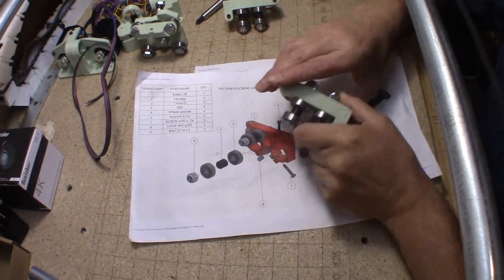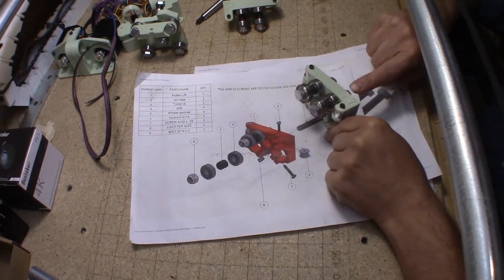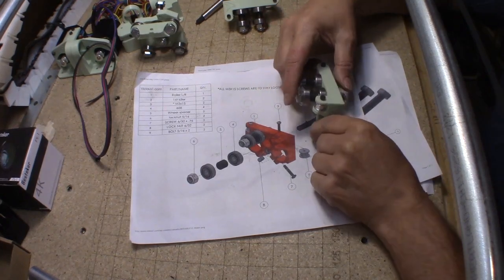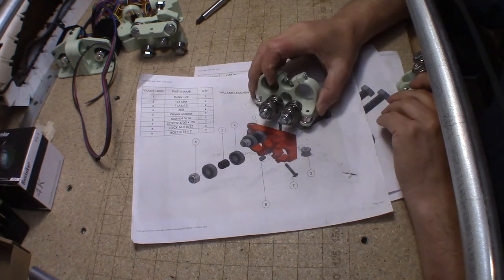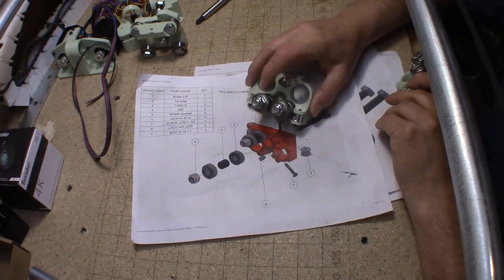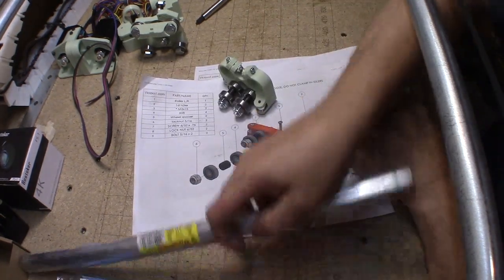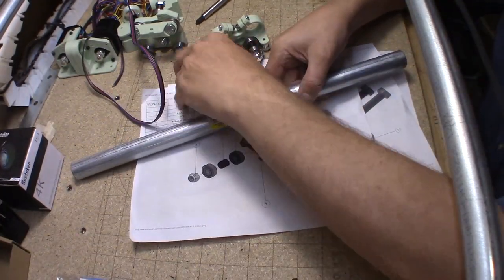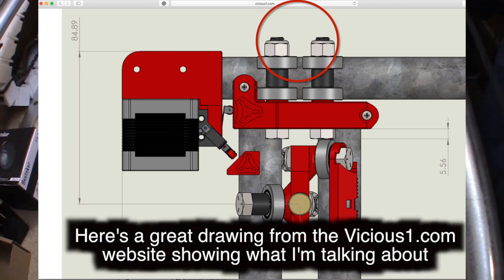We have a pulley up here and a pulley on the back side. The diagram shows the bolts coming through from this side, then pulley, spacer, pulley, and then a nut. This is the correct way according to the diagram. This is the mirror image - that's the correct way, but I've got the heads on this end.